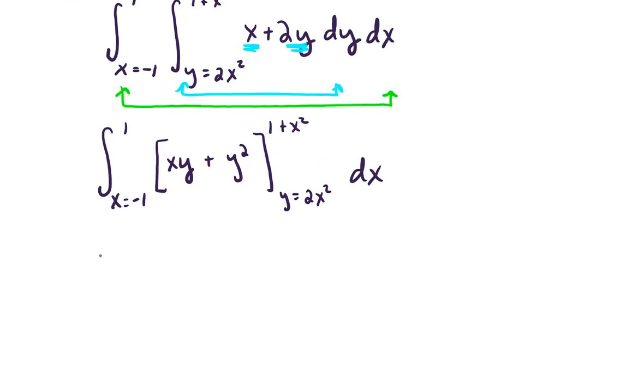Okay, so let's plug in. On the outer layer, we still have X equals negative 1 to 1, and I'm going to make a lot of space for us here. I have X times Y, and what I'm plugging in for Y is the 1 plus X squared plus Y squared. And again, what I'm plugging in for Y is the 1 plus X squared minus whatever we get when we plug in the lower limit of integration.